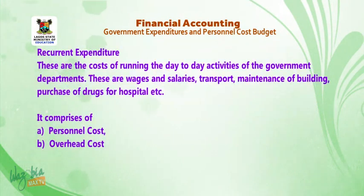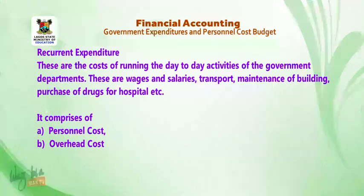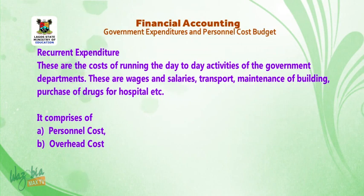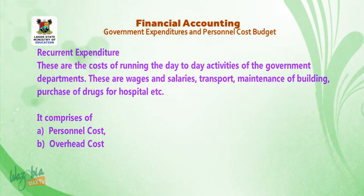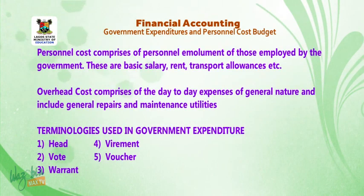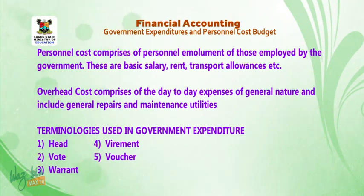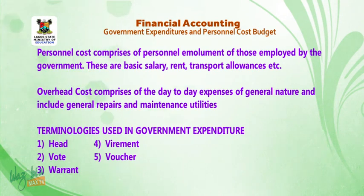Recurrent expenditure: these are the costs of running the day-to-day activities of the government departments. These include wages and salaries, transport, maintenance of buildings, purchases of drugs for hospitals, etc. It comprises: (a) personnel costs, and (b) overhead costs. Personnel costs comprise the personal emoluments of those employed by the government — basic salary, rent, transport allowances, etc. Overhead costs comprise the day-to-day expenses of a general nature, including general repairs and maintenance of utilities.